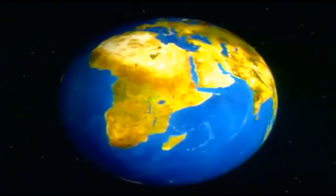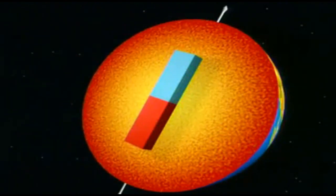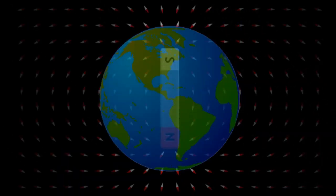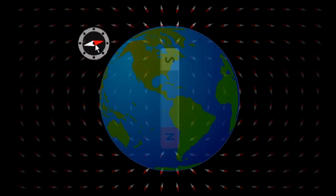The earth is surrounded by a magnetic field. It behaves as if there's a huge bar magnet running from north to south deep inside the earth. And this animation shows that for the arrows of a compass to point towards the top of the earth, the top of the earth has to be a magnetic south pole.